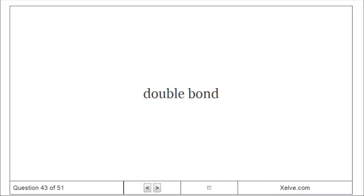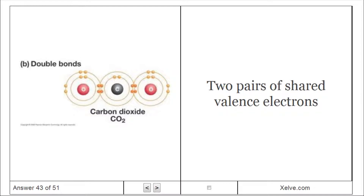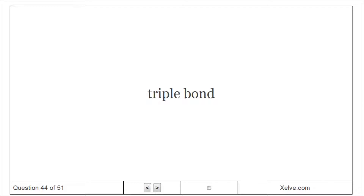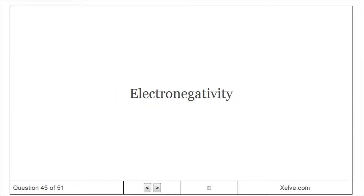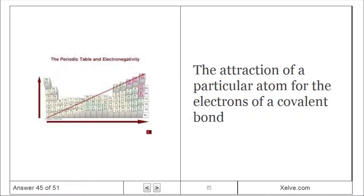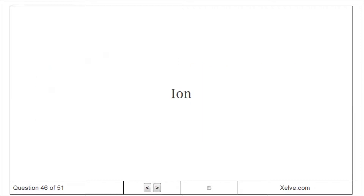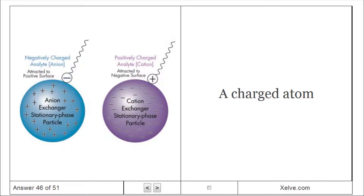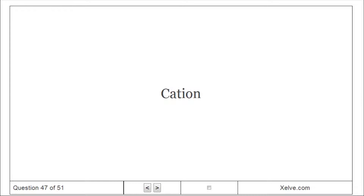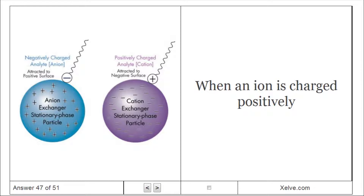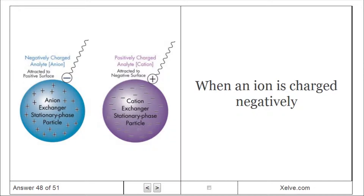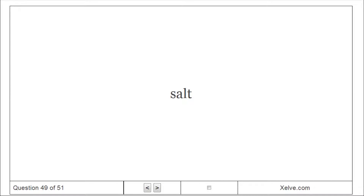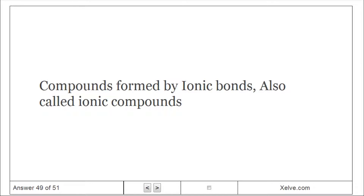Double bond: Two pairs of shared valence electrons. Triple bond: Three pairs of shared valence electrons. Electronegativity: The attraction of a particular atom for the electrons of a covalent bond. Ion: A charged atom. Cation: When an ion is charged positively. Anion: When an ion is charged negatively. Salt: Compounds formed by ionic bonds; also called ionic compounds.